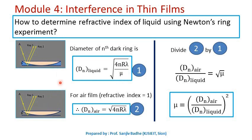If we replace this liquid with air, for an air film, the refractive index μ equals 1, and therefore the diameter of the nth dark ring with air film equals square root of 4nRλ.